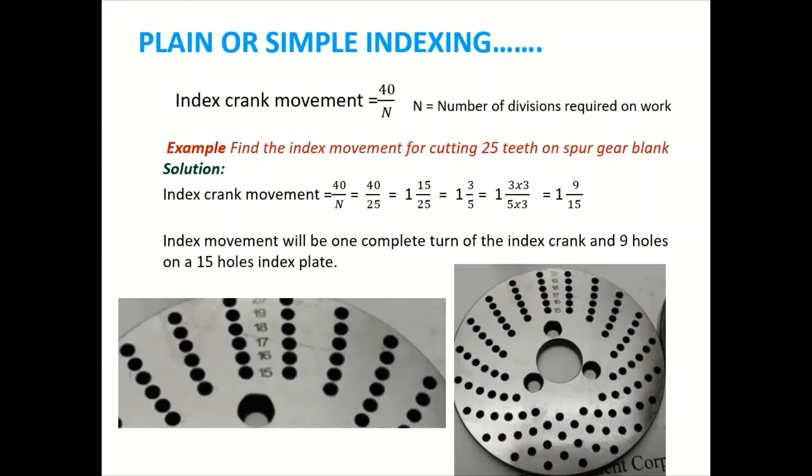Means if I take a gear blank, on that gear blank, I have to generate that 25 teeth. So for that, the index crank movement formula is 40 by N. So 40, how many teeth we require? 25.